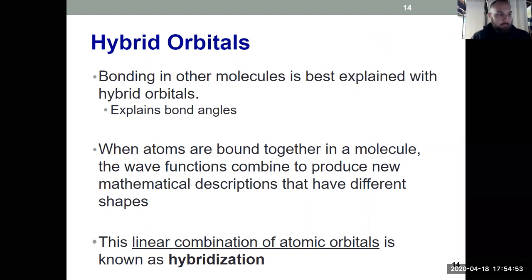And that process, these new orbitals that we get, is known as LCAO, Linear Combination of Atomic Orbitals. And we simply refer to that as hybridization. We have old orbitals that give us new hybrid orbitals.